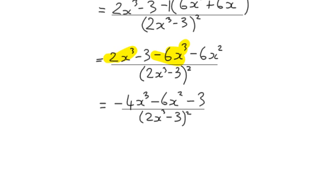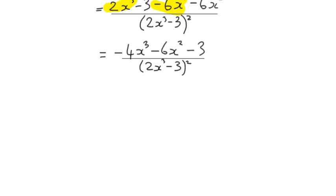That's our derivative. Of course, we are differentiating, so let's make sure we're aware of that. That would be fine as a solution. We've simplified the numerator. We could actually make it, if it were me, if we take a common factor of negative 1 in the numerator and just make the fraction negative 4x cubed plus 6x squared plus 3 all over 2x cubed minus 3 squared.